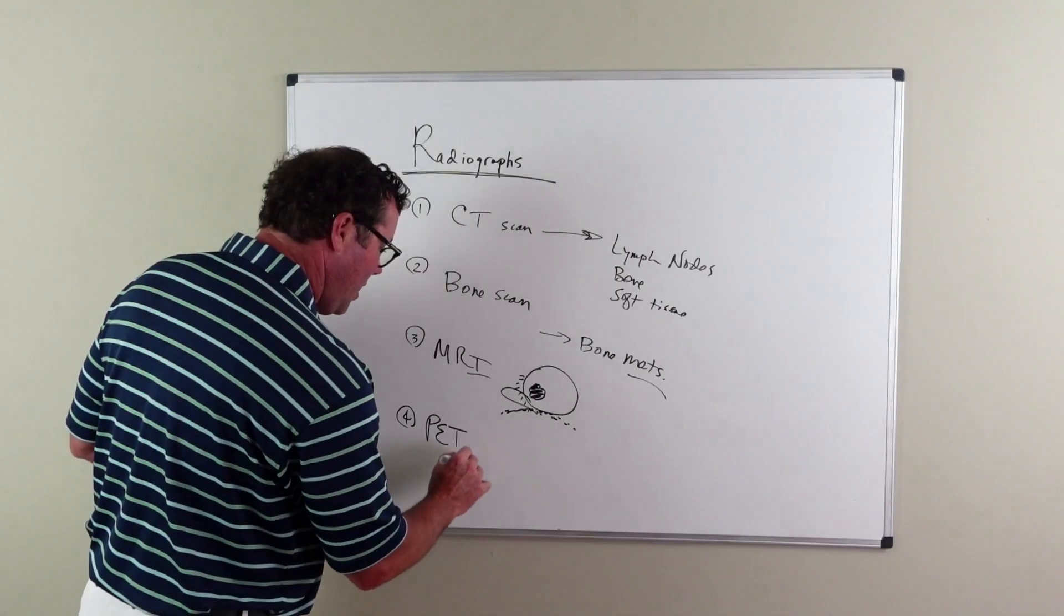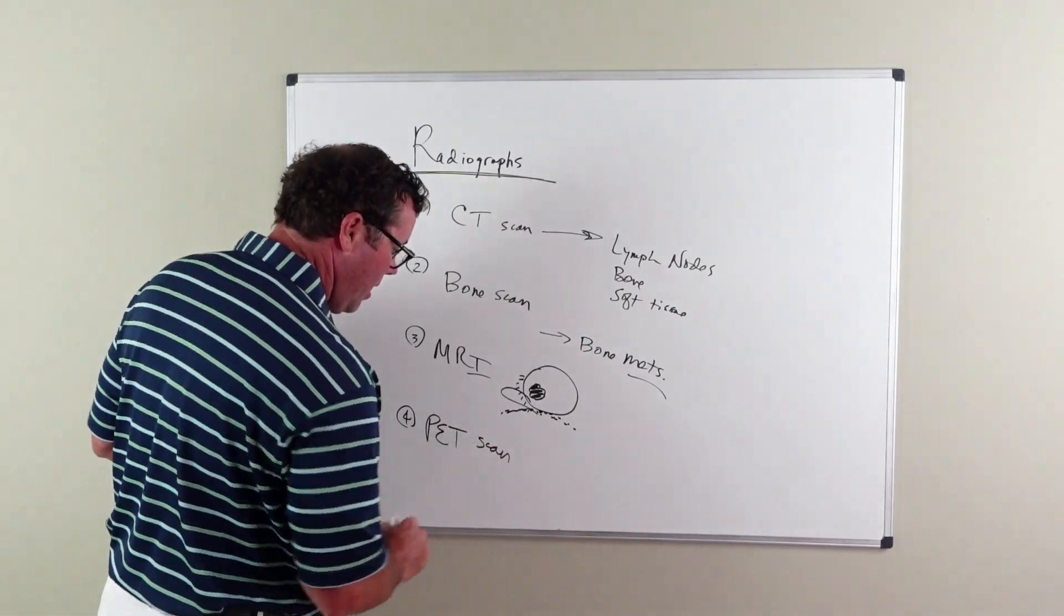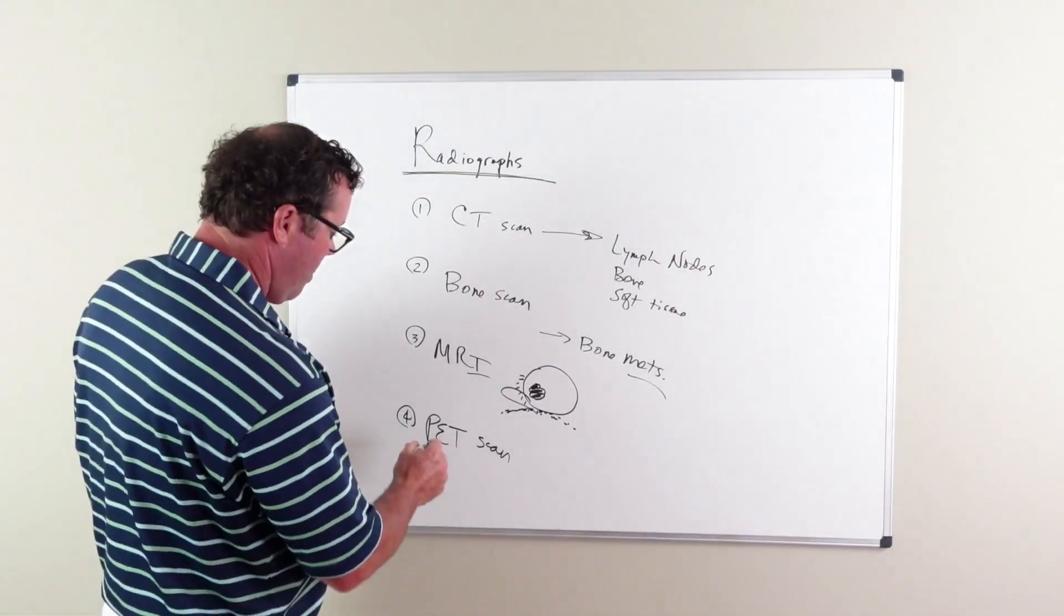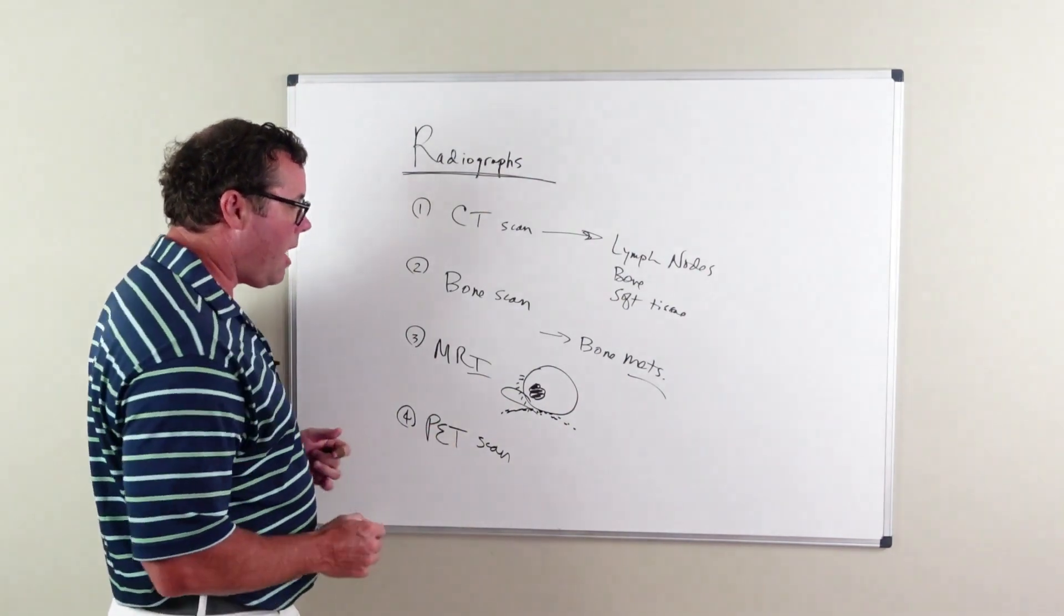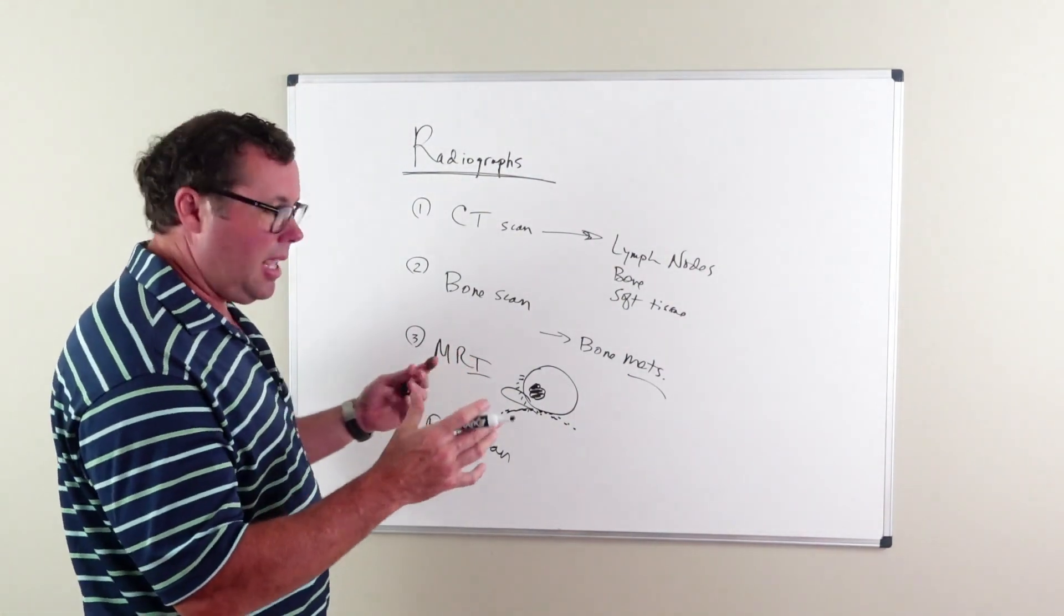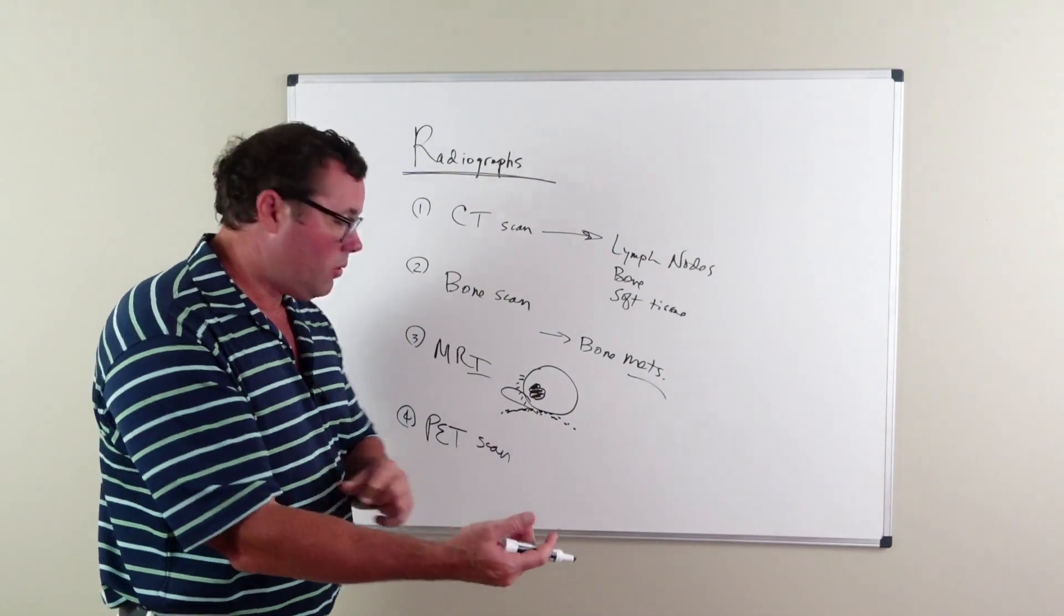The last imaging that is done is called PET scan, or positron emission tomography. What that is, again, is you're given a nuclear tracer.